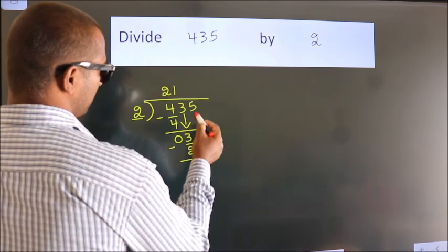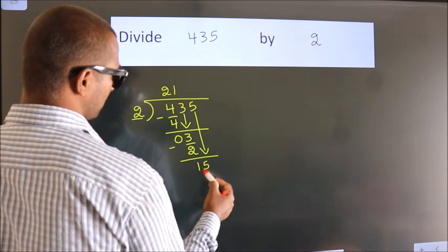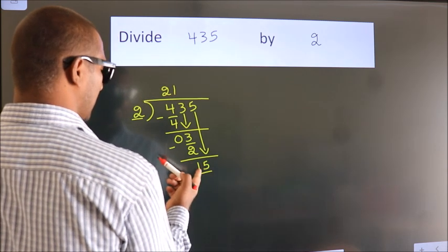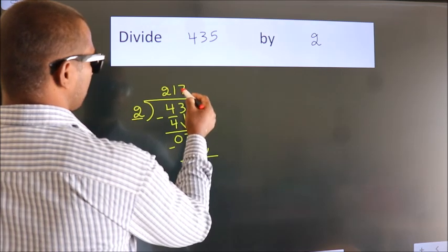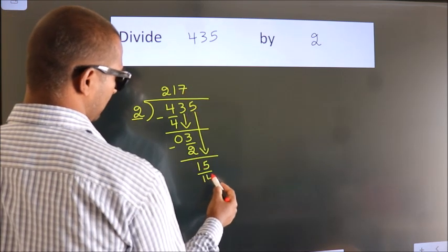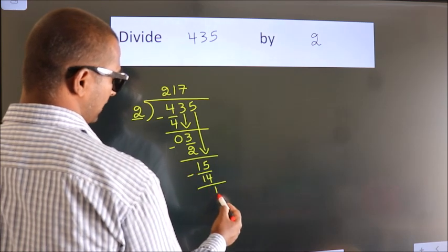After this, bring down the beside number. So 5 down, 15. A number close to 15 in 2 table is 2 7s, 14. Now we subtract. We get 1.